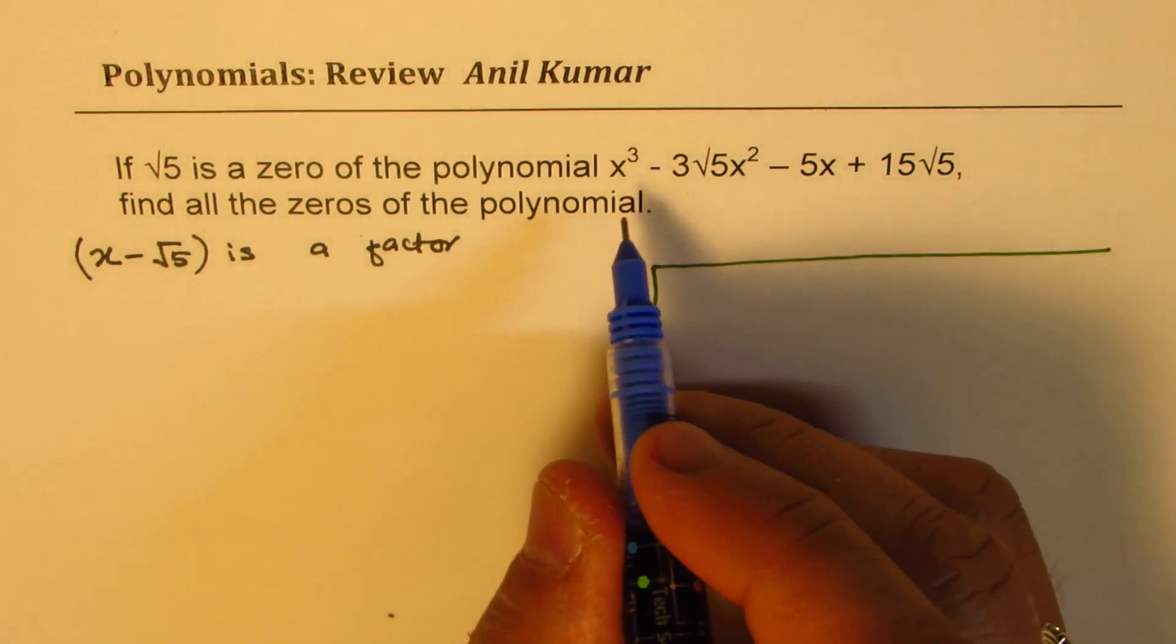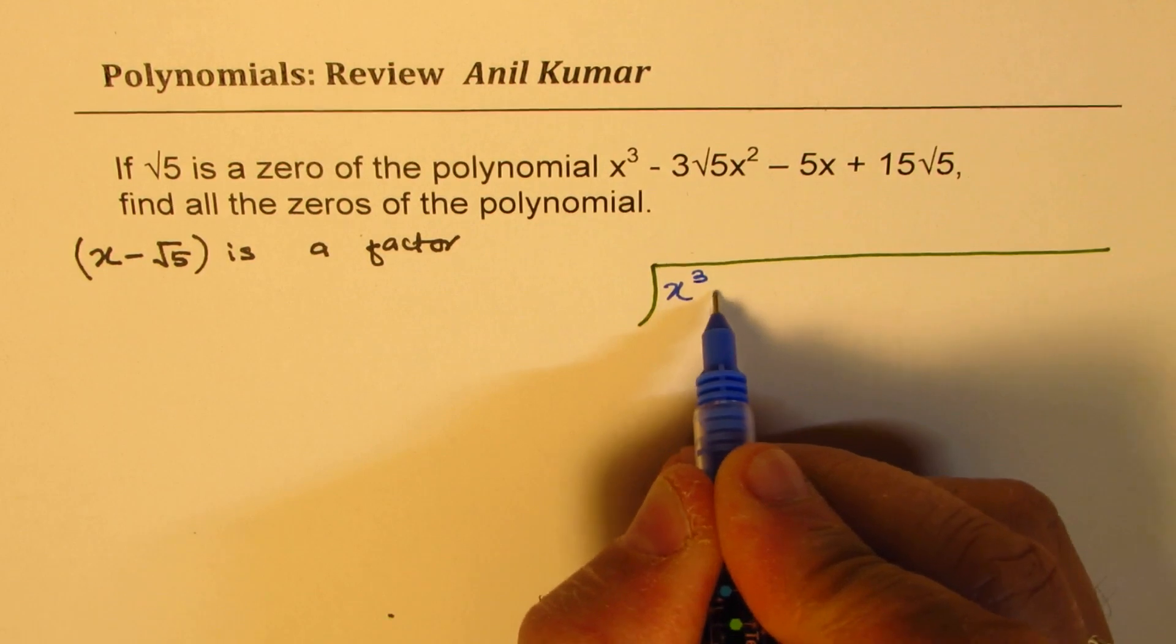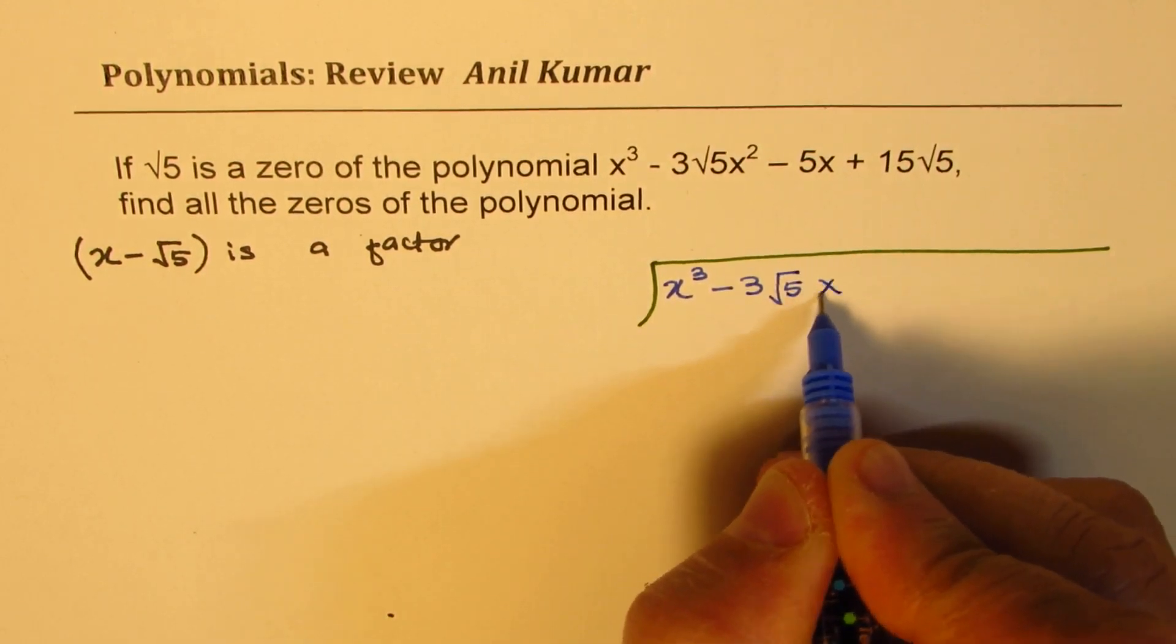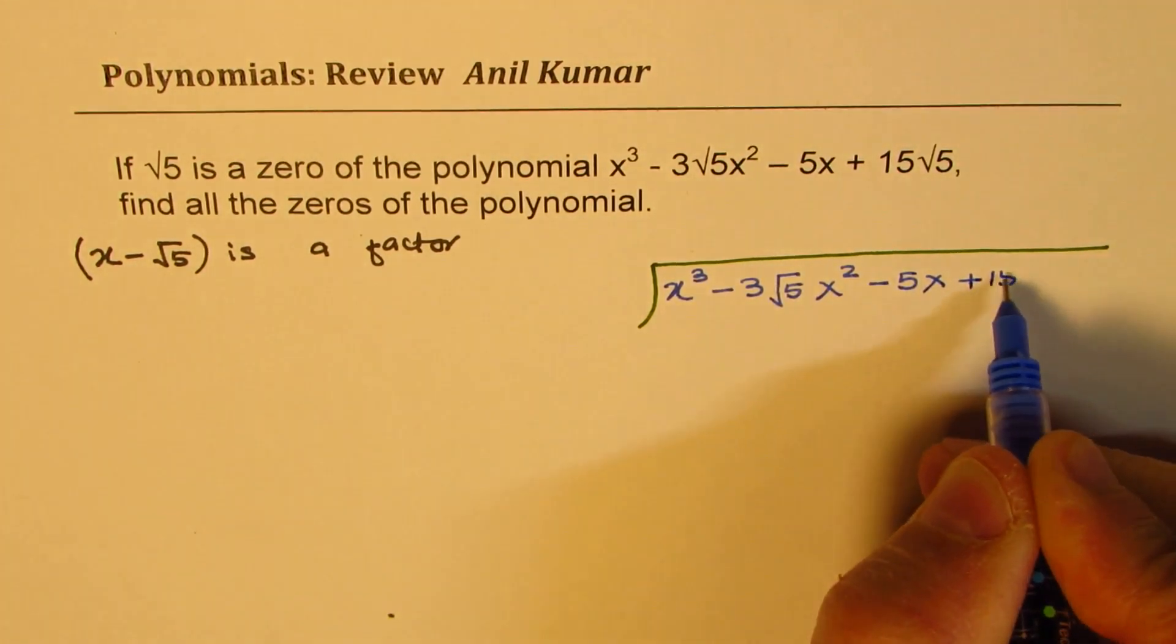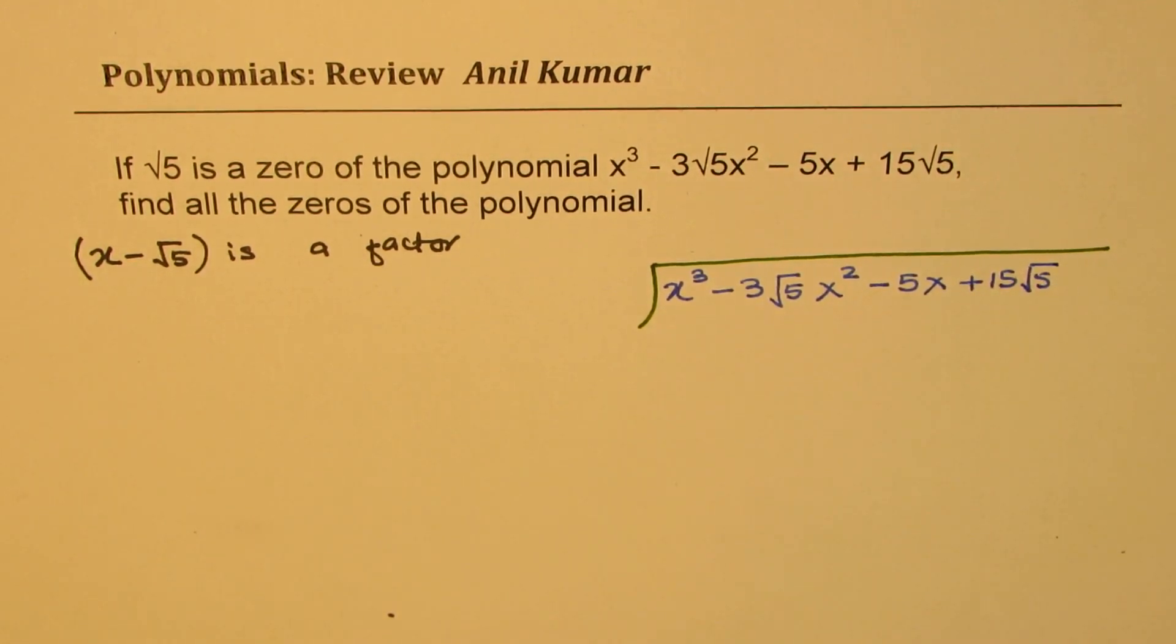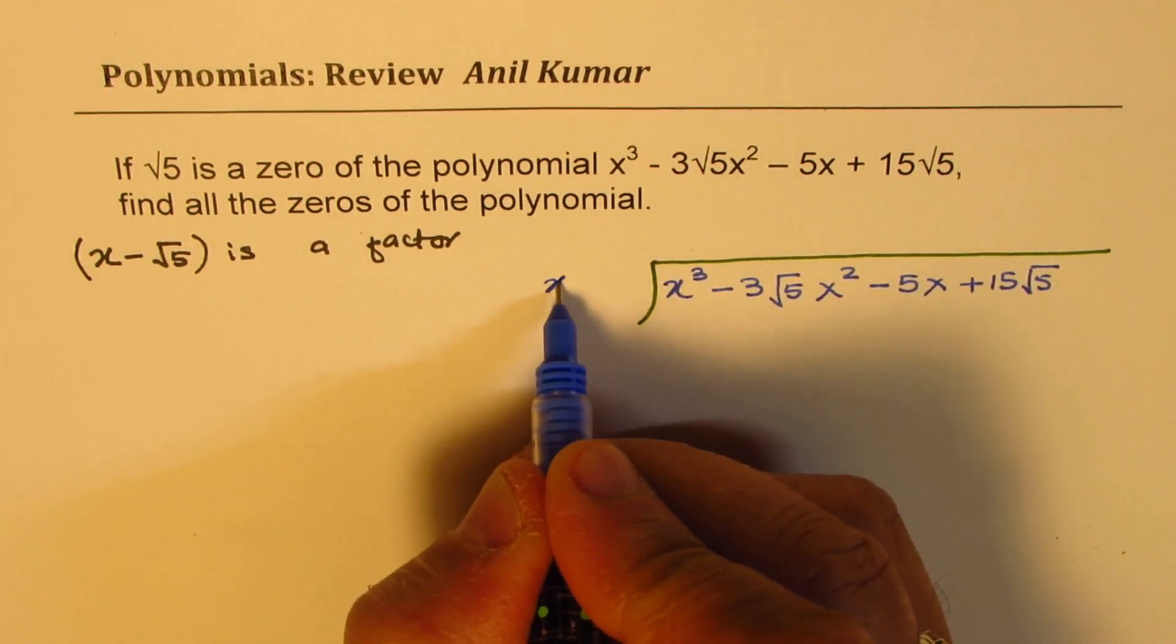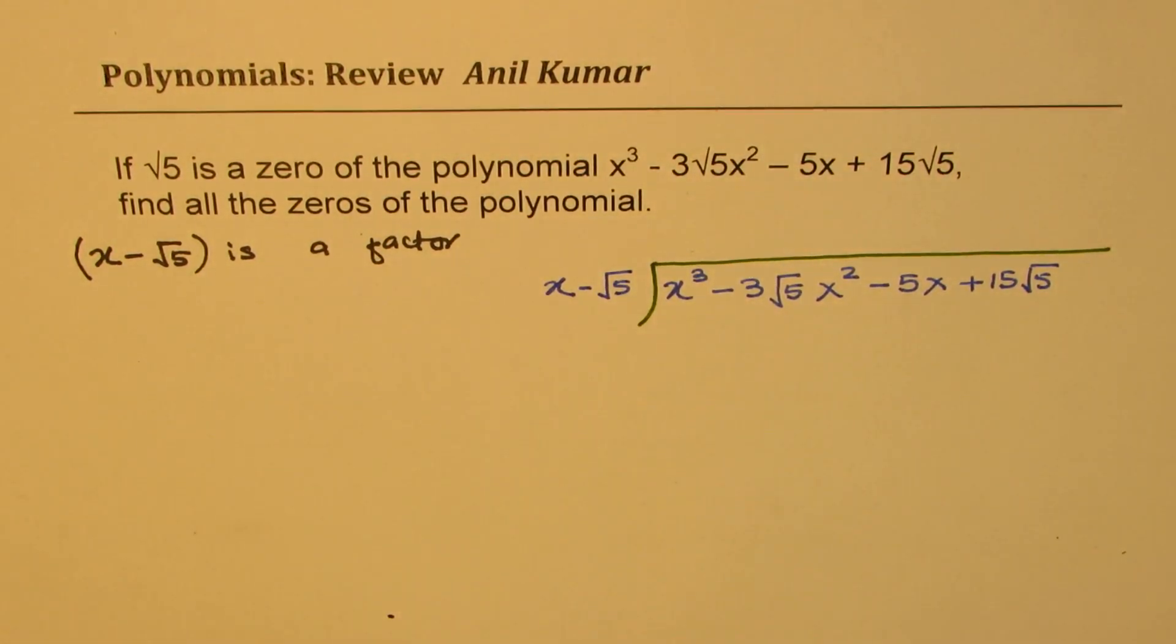So that is the strategy which we are going to use. We have here x cubed minus 3 square root 5 x squared minus 5x plus 15 square root 5. Now, this term square root 5 makes it slightly difficult to work with, and that is why this question has come to me. This is x minus square root 5. We need to divide.